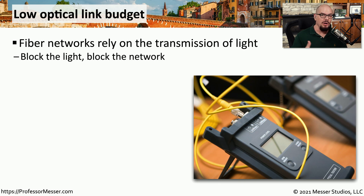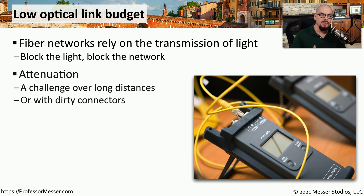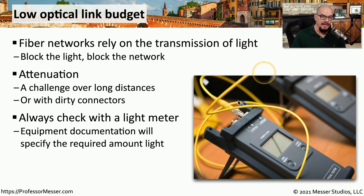If you're having a network connectivity problem over a fiber network, your issue may be related to light. On a fiber optic network, we use light to send information from one side to the other, and anything blocking that light will cause intermittent connectivity. One of the most common causes for loss of light or attenuation on a fiber connection is a dirty connector — always clean connectors before installing them, and re-clean them when troubleshooting. If you have a light meter, connect it to both sides to measure how much light is coming through and compare the results to the documentation for your network device to see if it's receiving enough light to operate properly.